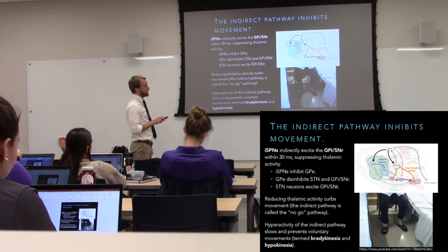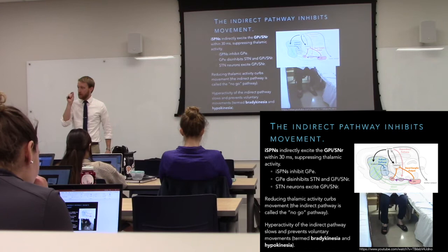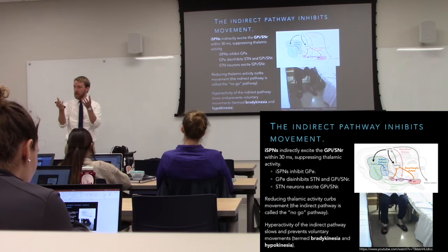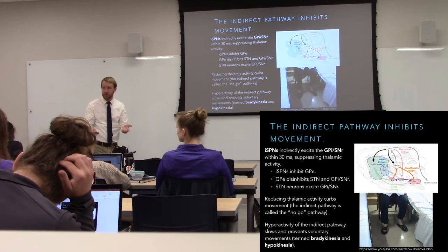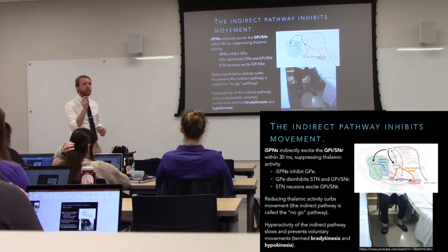We also disinhibit the STN, which again excites the output nuclei — just like it does in the hyperdirect pathway — and that also contributes. So this allows us to have very quick execution of action by the direct pathway, flanked on both sides by inhibition of the thalamus. That decreases noise, because there's always junk going on in your brain. So the junk gets filtered out by inhibition from the output nuclei, and we just temporarily relieve that inhibition with the direct pathway.